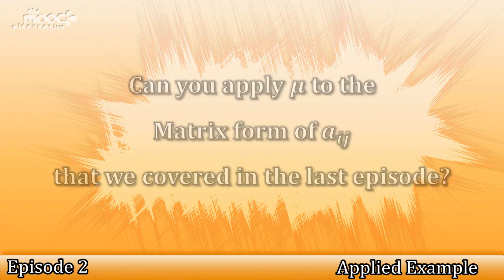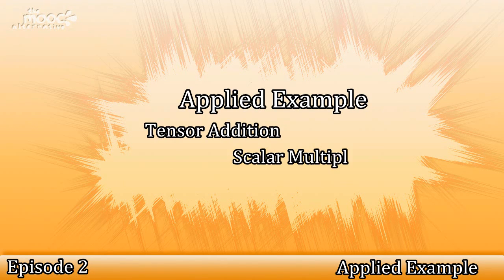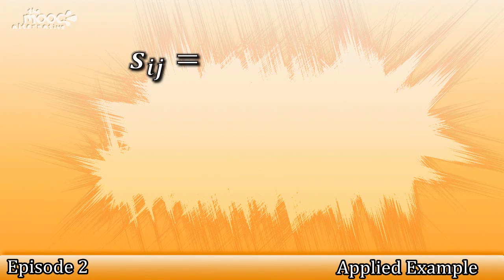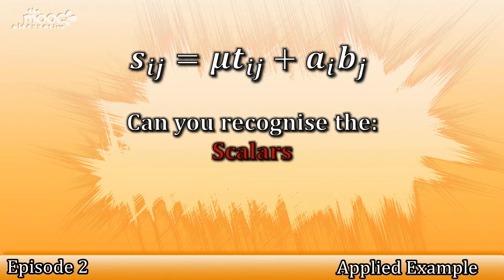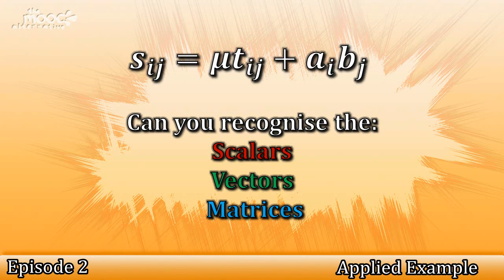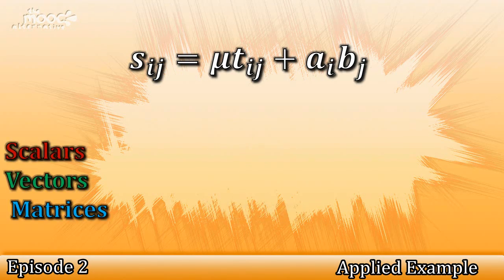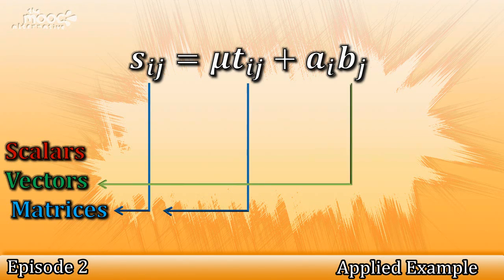Let us now consider a more complicated example with both tensor addition and scalar multiplication. Let's have a look at this equation: S_ij = mu * t_ij + a_i * b_j. Can you recognise which parts of this equation are scalars, which are vectors or first-order tensors, and which parts are second-order tensors? Firstly, we have both S_ij and T_ij as second-order tensors. a_i and b_j are both first-order tensors, or vectors, and mu is our scalar.